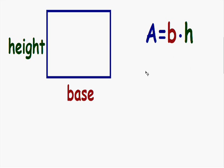The base is equal to the length of the bottom or the top of the rectangle, since the bottom and the top have the same length. And the height is equal to the length of the side of a rectangle. Since both sides have the same length, the height is equal to the length of either side of the rectangle.